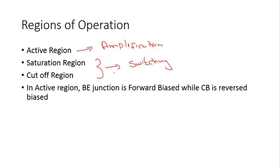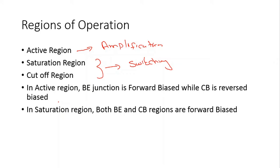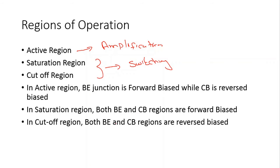In the active region, the base-emitter junction is forward biased while the collector-base junction is reverse biased. In the saturation region, both the base-emitter and collector-base junctions are forward biased. And in the cutoff region, both the base-emitter and collector-base junctions are reverse biased.